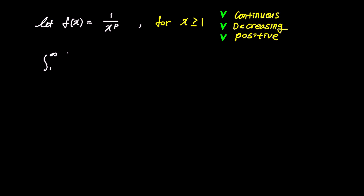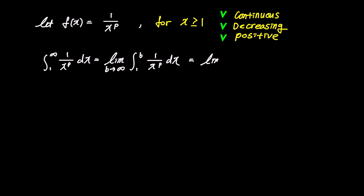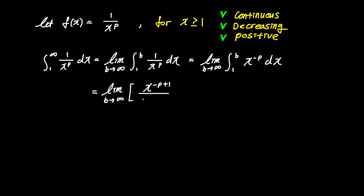Now let's integrate 1 over x to the power p from 1 to infinity. To solve this as a proper improper integral, we'll rewrite the expression using limits. As v approaches infinity, the expression becomes the limit of the integral of 1 over x to the power p from 1 to v. To simplify the integration, let's rewrite 1 over x to the power p as x to the power of negative p. Upon integration, we get the limit of x to the power of negative p plus 1 over negative p plus 1.